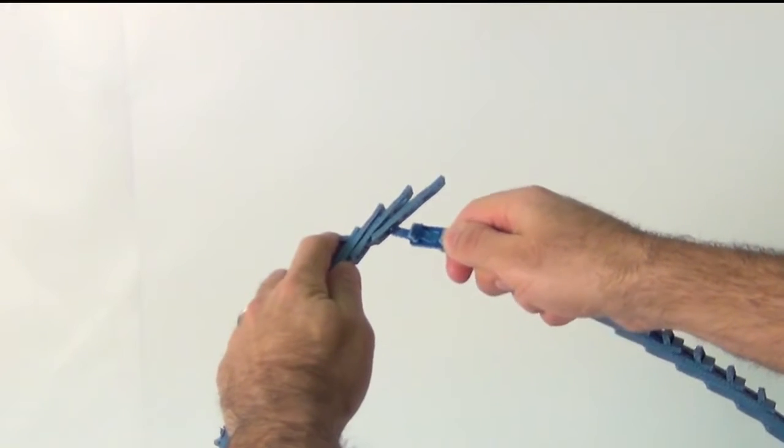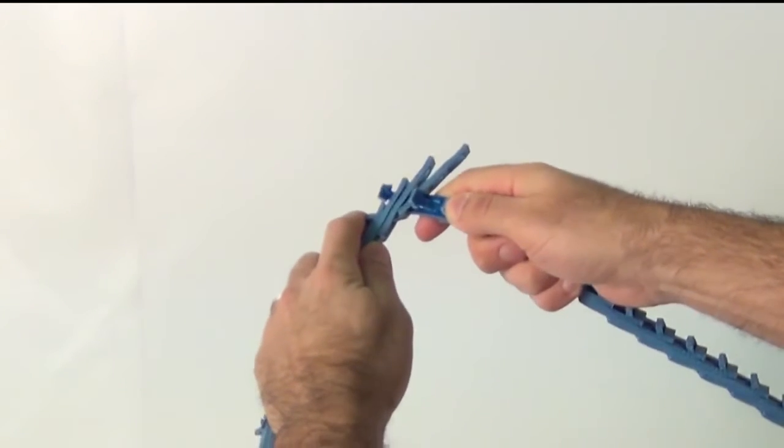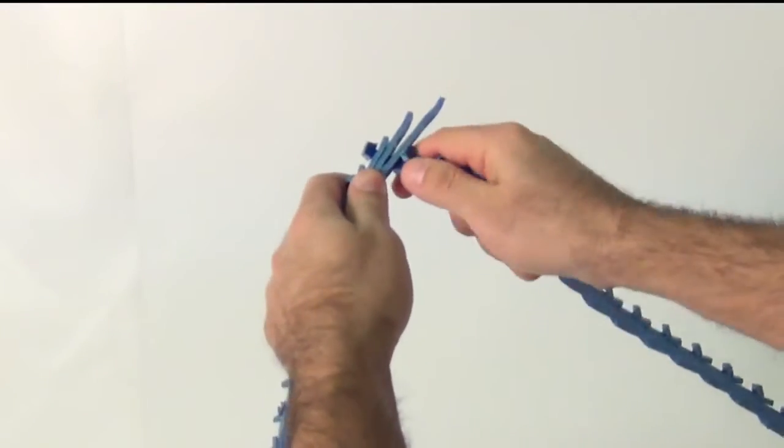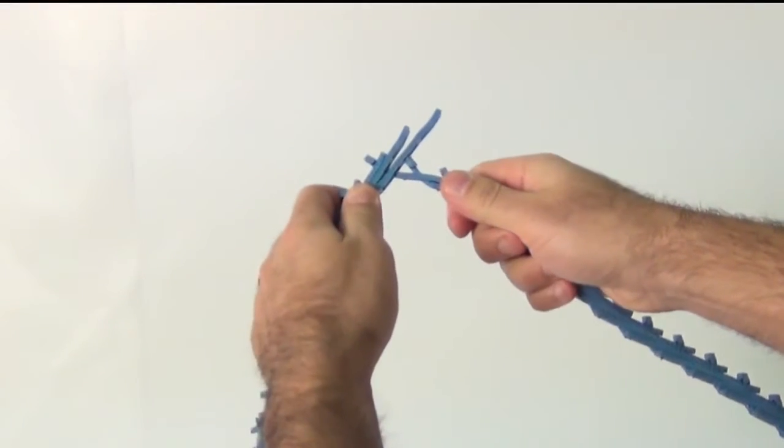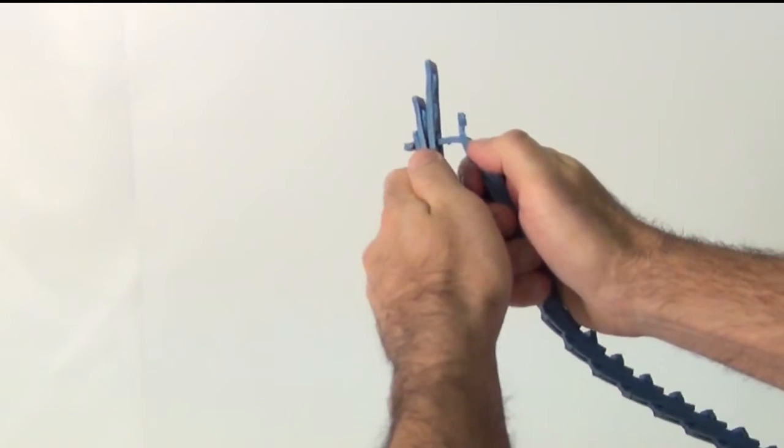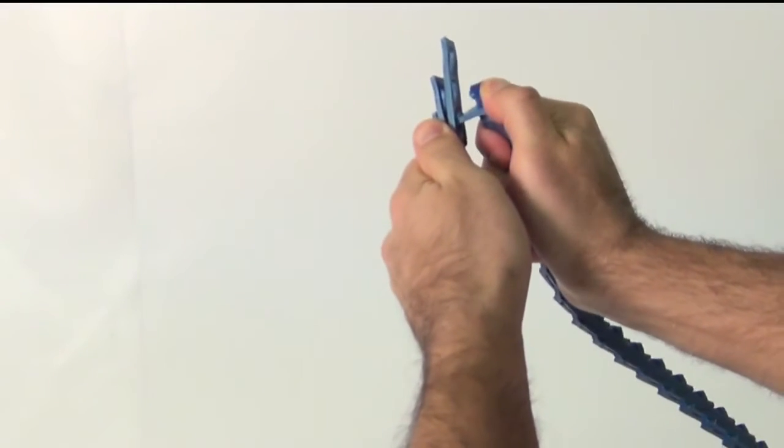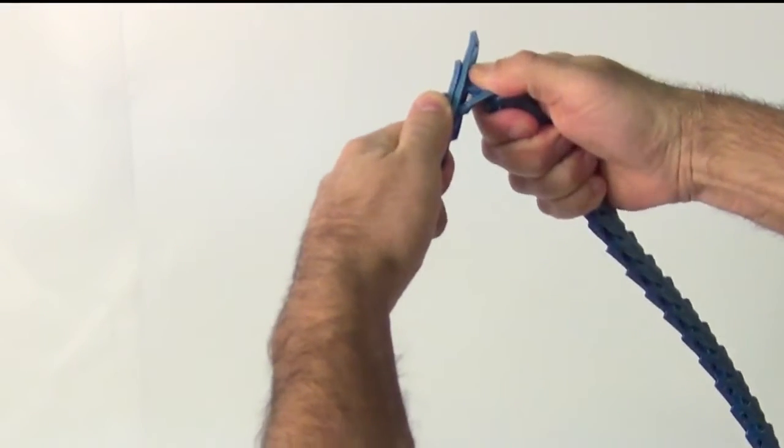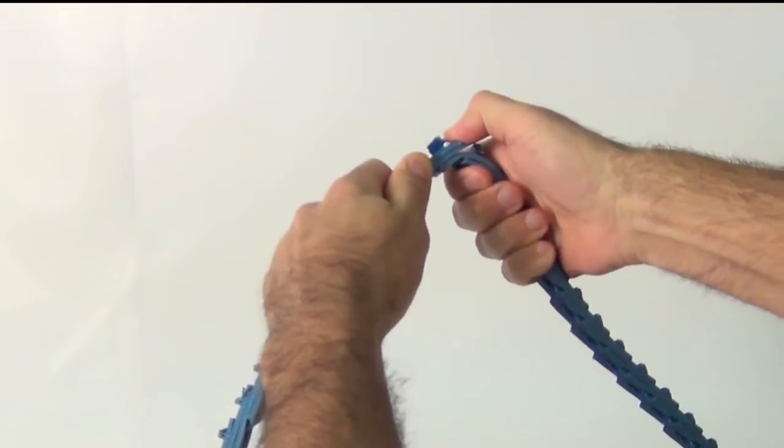Assembly. With tabs pointing outwards, place end tab through three links at once and twist tab into place. Bend back and insert second tab through second hole by twisting tab 90 degrees with thumb.